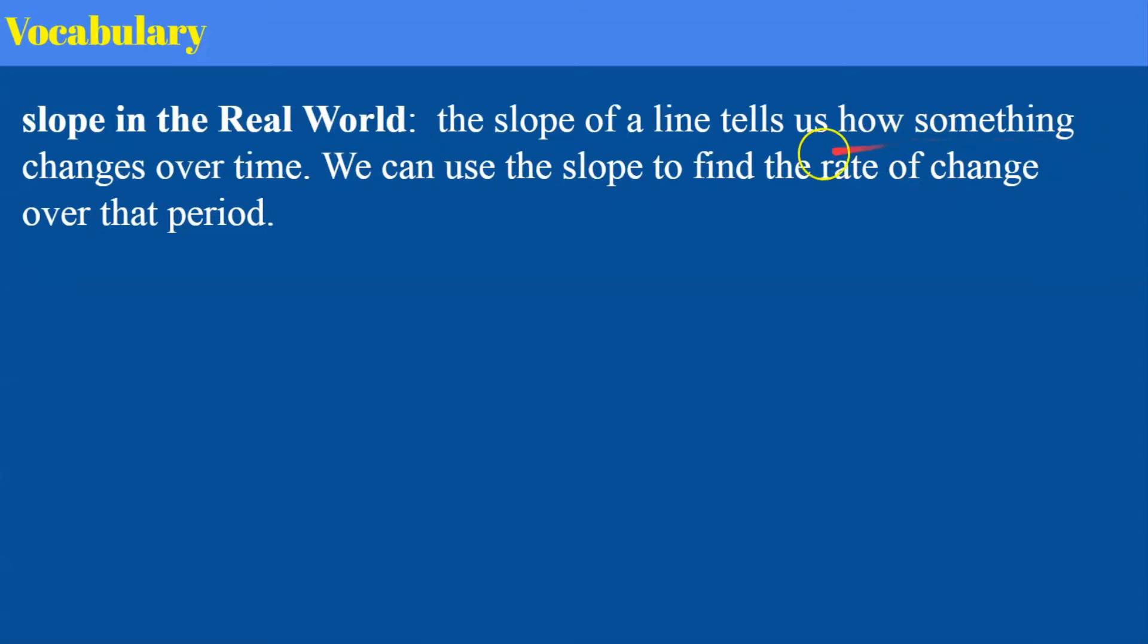So remembering this rate of change is a ratio telling us how much per one, how much per one. So our change in y over our change in x. We're going to use this knowledge to interpret the slope. Now we need to understand what interpret means. Interpret means to explain or translate the meaning of.